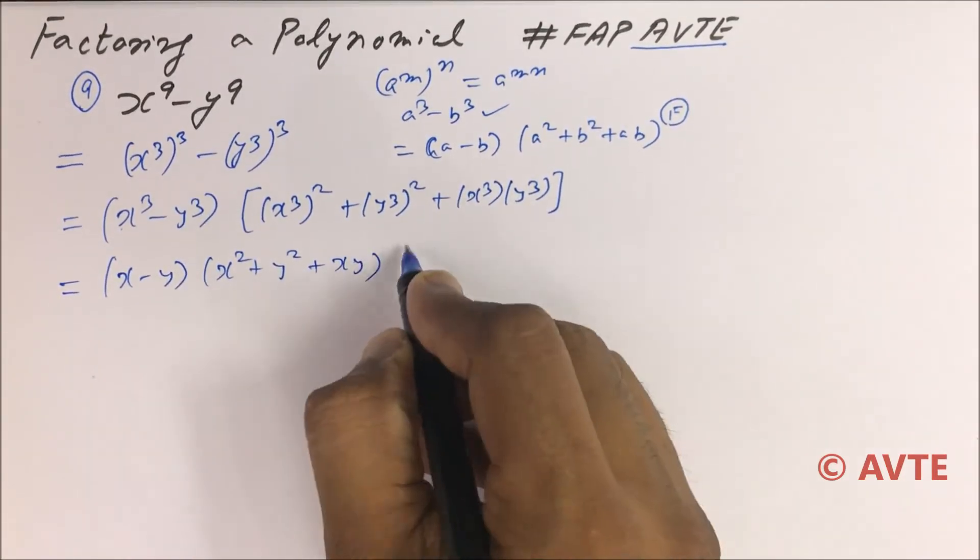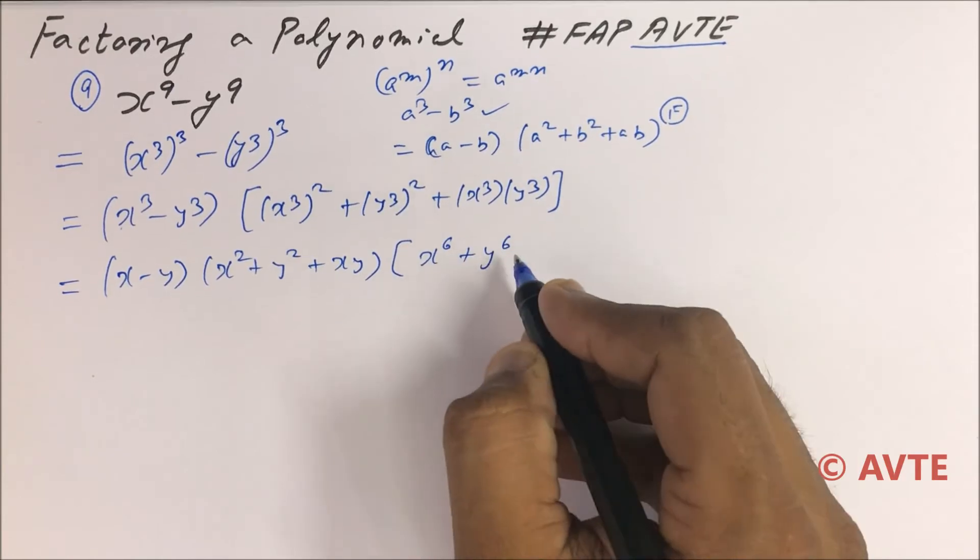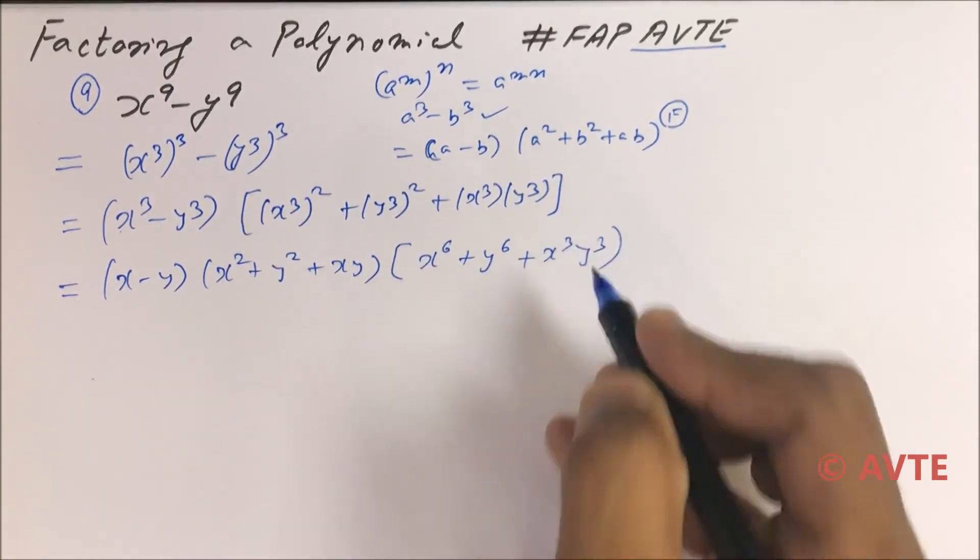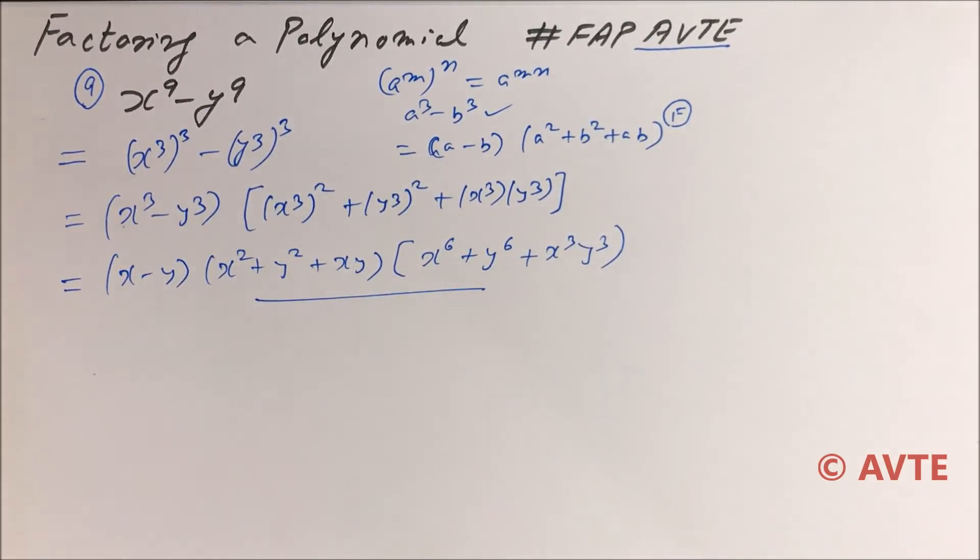And this is x raised to power 6 plus y raised to power 6 plus x cube y cube. So guys, this is your final answer. Simple. So x raised to power 9 minus y raised to power 9.